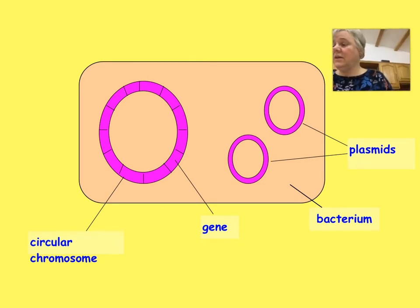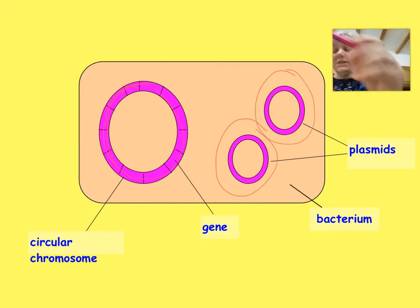Bacteria are often used for this process because, if you remember back to your cell biology unit, they not only have circular DNA contained within them but also these smaller rings of DNA called plasmids. These are very easy to take out of the bacterial cell, to alter, and then to replace them back into bacterial cells. We're going to look at how that process takes place.